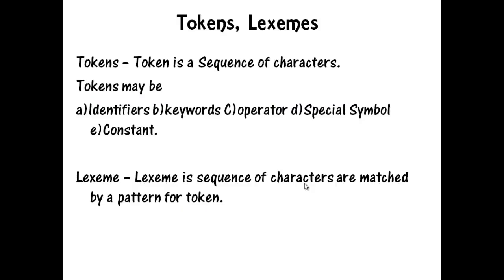What are tokens and lexemes? A token is a sequence of characters that can be treated as a single logical unit. Tokens may be identifiers, keywords, operators, special symbols, and constants. A lexeme is a sequence of characters in a source program that can be matched by a pattern for a token.